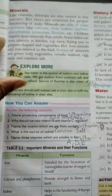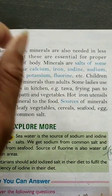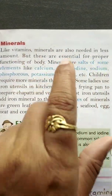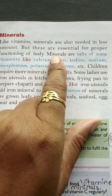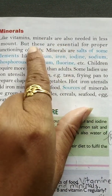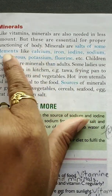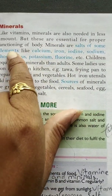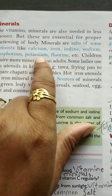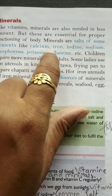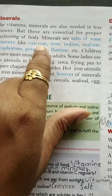Now the next one is minerals. Like vitamins, minerals are also needed in very limited quantities in our body, but their function is very important. Minerals include elements such as calcium, iron, iodine, sodium, phosphorus, potassium, and fluorine — all these are the names of minerals.